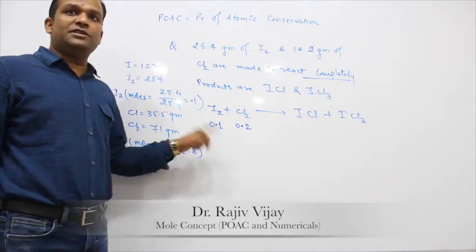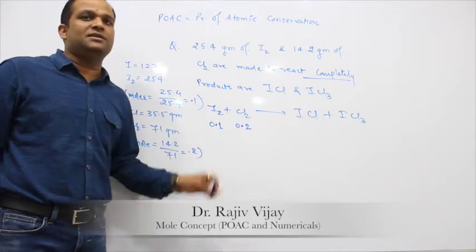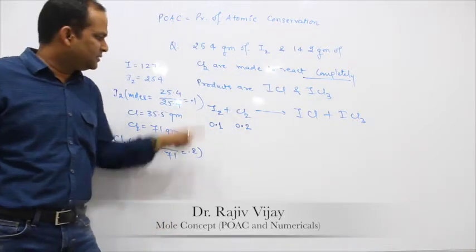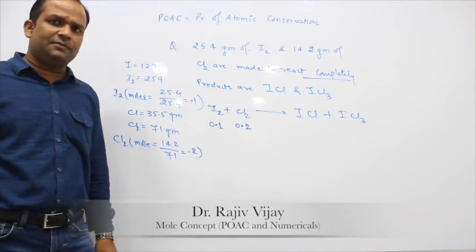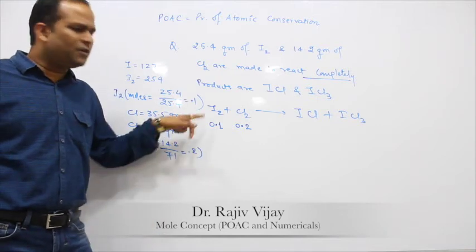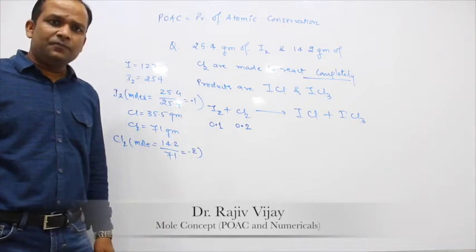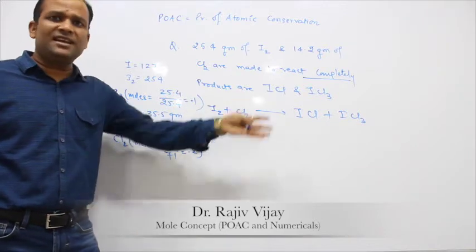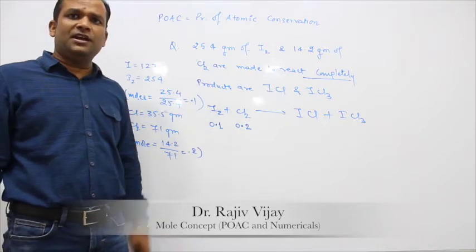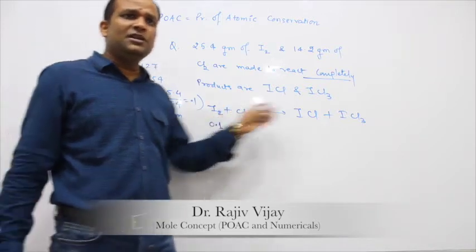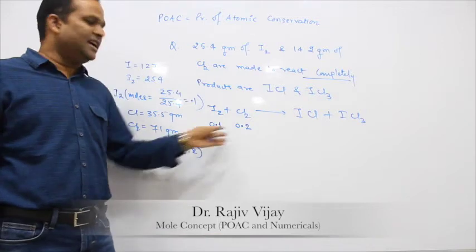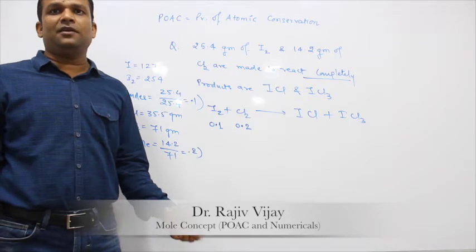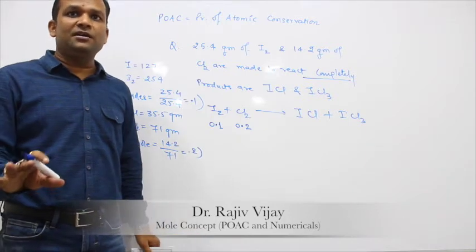Now apply POAC to iodine. How much iodine is on the left-hand side? 0.1 moles. If it is completely consumed, this much iodine goes to the right-hand side, and if chlorine is completely consumed, this also goes to the right-hand side. So the atoms present on the left-hand side should be equal to atoms present on the right-hand side. That is the Principle of Atomic Conservation.